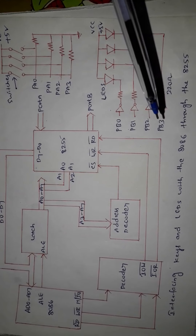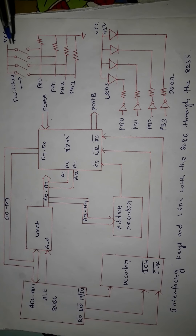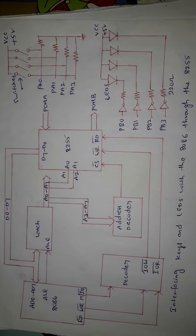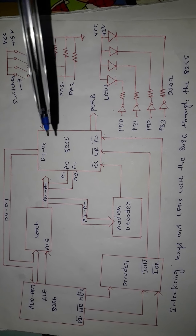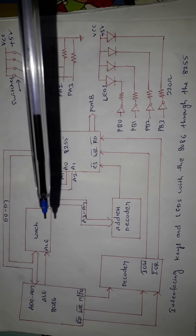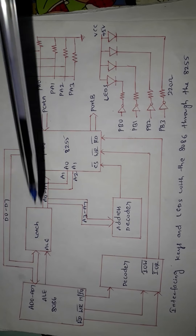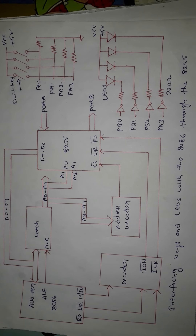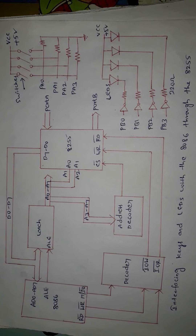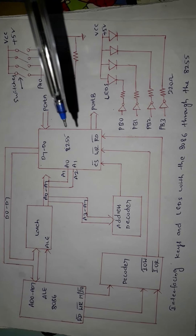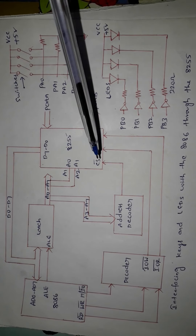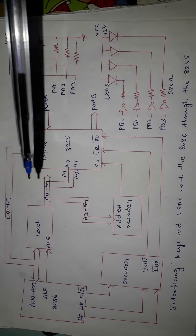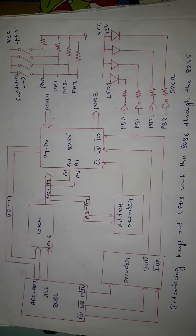This is how we interface four switches and four LEDs by using 8255 to the 8086. We are using an 8-bit address, though a 16-bit address can also be used if required. We are using two decoders — one for chip selection logic and another for read/write control signals — and a latch because the address and data are multiplexed in the 8086.